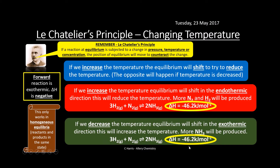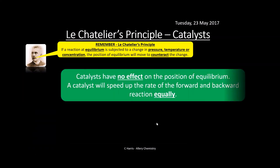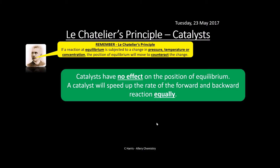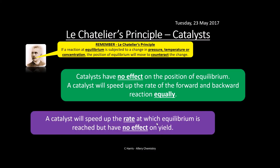It's all about looking at the enthalpy value next to the equation — this tells you what the forward reaction is. Catalysts have no effect on the position of equilibrium — very important. A catalyst speeds up the rate of both the forward and reverse reactions equally, with no preference. Catalysts will speed up the rate at which equilibrium is reached, but they won't have any effect on yield.